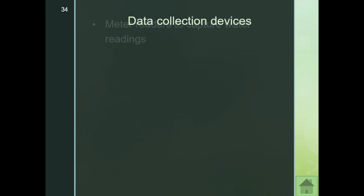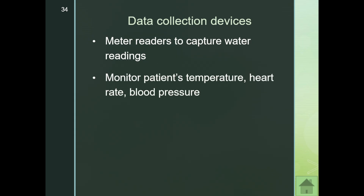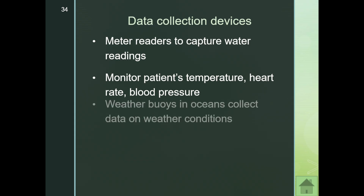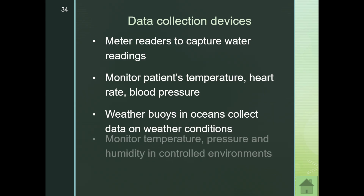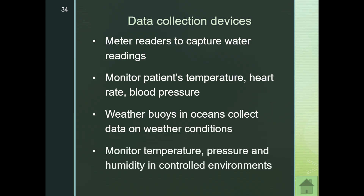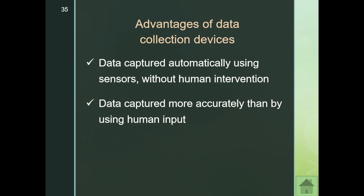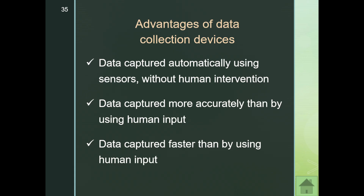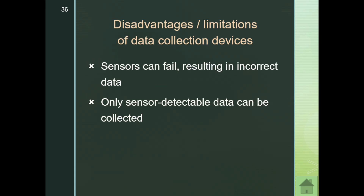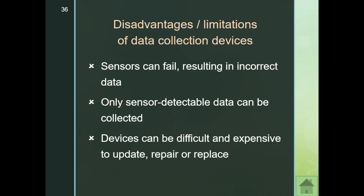Data collection devices include meter readers for water readings, medical devices that monitor temperature, heart rate, and blood pressure, weather buoys in oceans, and sensors monitoring temperature, pressure, and humidity in controlled environments. These devices capture specific data automatically using sensors. Advantages include greater accuracy than humans and faster capture. Disadvantages include sensor failure and the limitation that only sensor-detectable data can be collected — for example, a heart rate sensor cannot detect blood sugar levels.